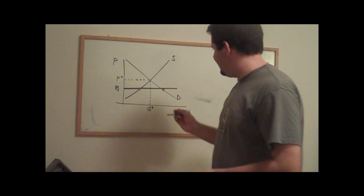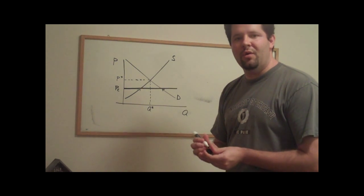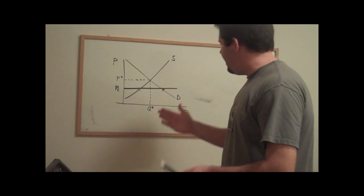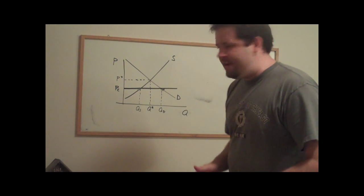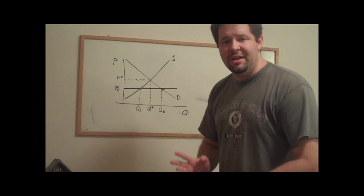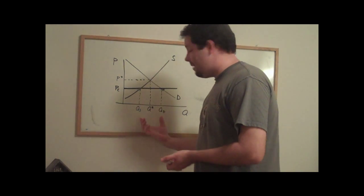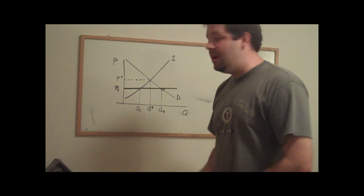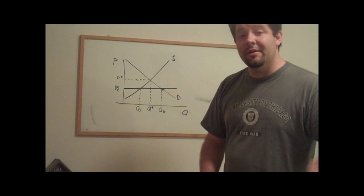If we just read off of the supply curve and the demand curve what quantities correspond to this binding price ceiling, that will tell us what the quantity supplied and quantity demanded are. What we see is that when we impose a price ceiling, quantity demanded exceeds the quantity supplied. So we have a shortage. We've got more demanders than we have suppliers at the price that is allowed to prevail in the market.